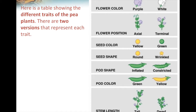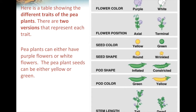Here's a table showing the different traits between the pea plants he used. There are two different versions for each trait. For example, the pea plants had flowers, and the color of the flowers could either be purple or white. The seeds of the pea plant had two different shapes, so the seeds could either be round or wrinkled. And the seeds were in pods that had different colors, so the pods could either be green or yellow.